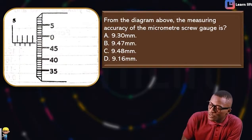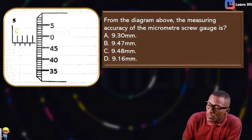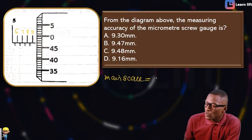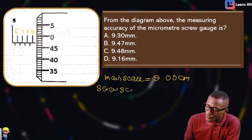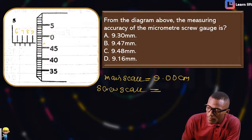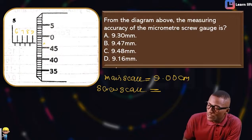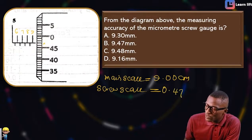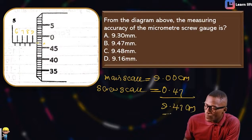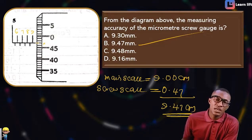Counting the main scale: 6, 7, 8, 9 — so the main scale reading is 9.00 mm. Now for the screw scale, let's find where they meet. Counting: 40, 41, 42, 43, 44, 45, 46, 47 — they meet at 47. So the screw scale reading is 0.47 mm.